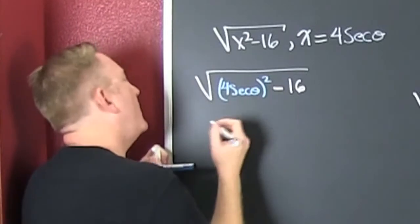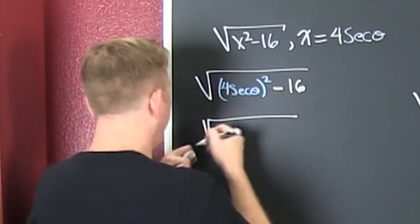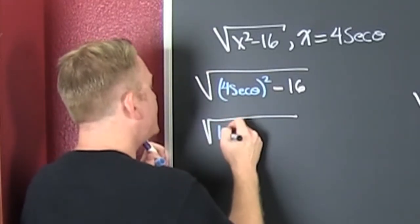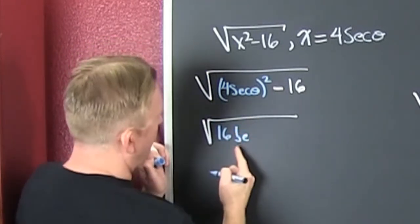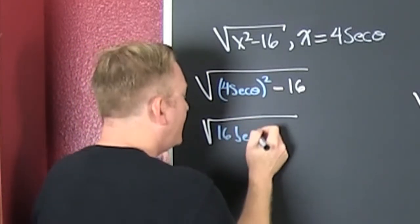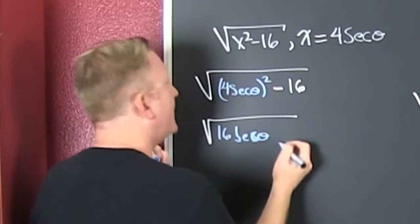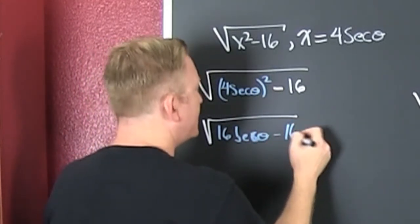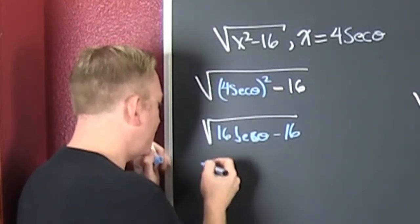Now, when I square that secant, that's gonna be that square root of wait for it. Sixteen secant squared theta. And then I'm gonna subtract off that 16. Now what? Factor out that 16.